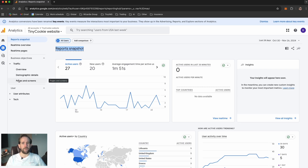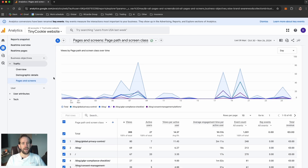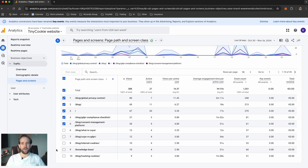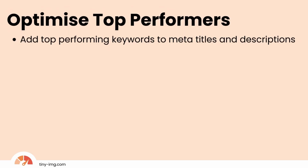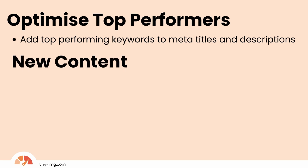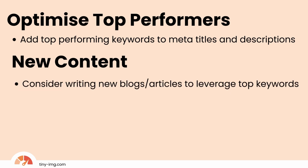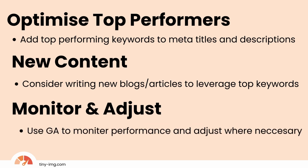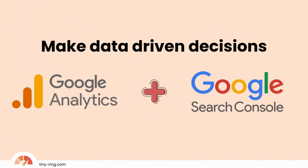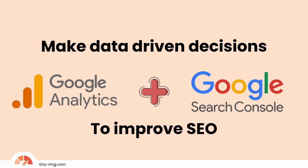Next, under Business Objectives, select Traffic then Pages and Screens. Here you can see which of your individual pages gets the most views, users, engagement, and more. Compare the top performing pages in Google Analytics with the top ranking keywords in Google Search Console to identify keyword opportunities and target new audiences. By combining data from both tools, we can gain valuable insights and make data-driven decisions to improve our SEO strategy.